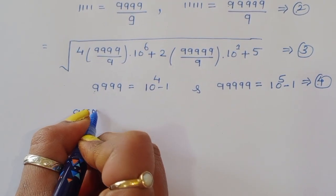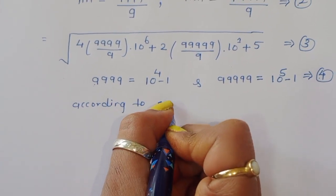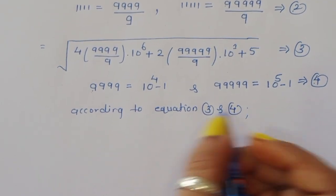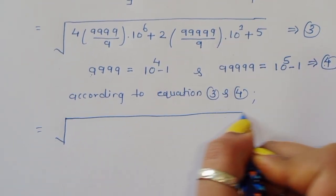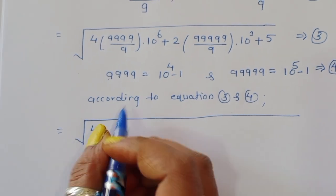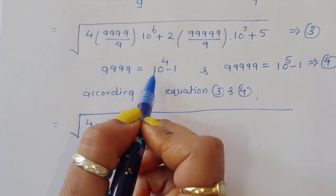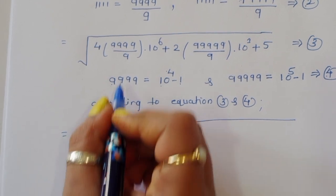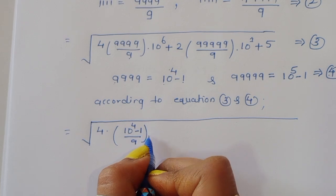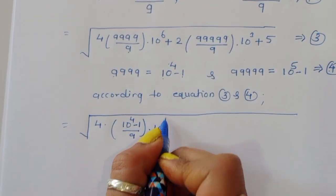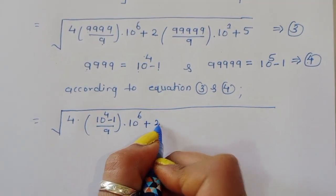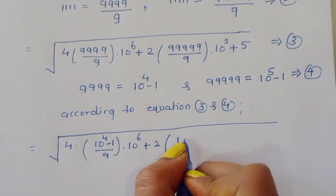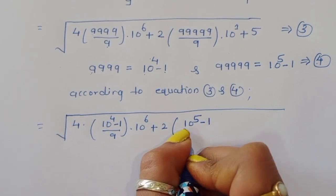After substitution, we get: square root of 4 times (10^4 minus 1) divided by 9, times 10^6, plus 2 times (10^5 minus 1) divided by 9, times 10^1, plus 5.